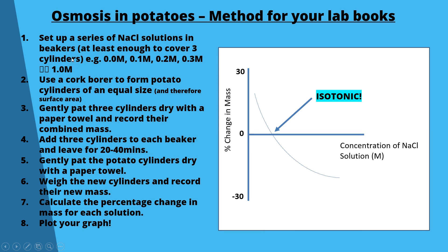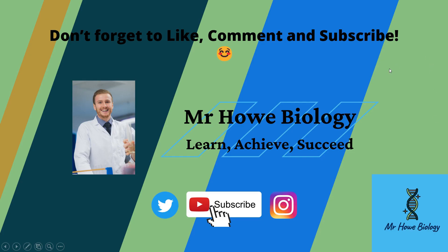Use a cork borer to cut potato cylinders of equal size to control surface area. Gently pat three cylinders dry with a paper towel — don't squeeze them or you'll remove water from the cytoplasm and vacuole — then record their combined mass. Add three cylinders to each beaker and leave for at least 20 minutes (40 minutes is ideal). Pat dry again, weigh, and record the new mass. Calculate percentage change in mass and plot your graph.